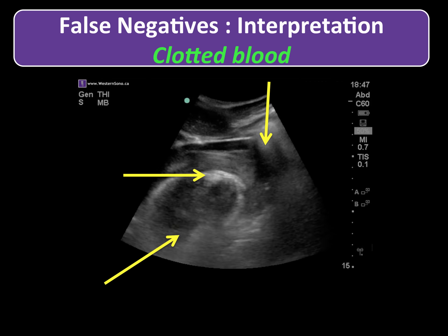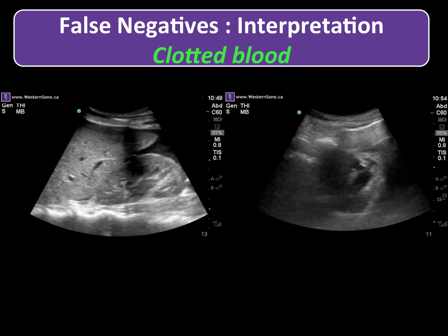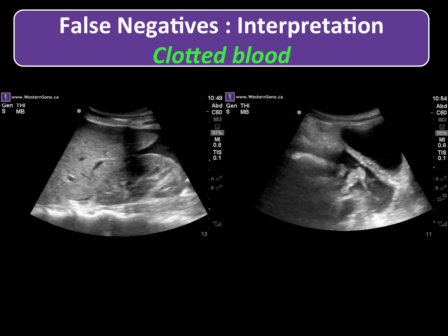Clotted or older blood in the abdomen can take on a similar appearance. Here are some more subtle examples of clotted blood in the abdomen. As you can see in these clips, anechoic blood is clearly visible; however, you can begin to appreciate a more isoechoic density to the fluid in the right upper quadrant and in the pelvis. These clips were taken several hours after the patient's acute presentation to the ED, and some of the blood had already pooled and clotted, appearing almost hyperechoic — most strikingly in the pelvis.